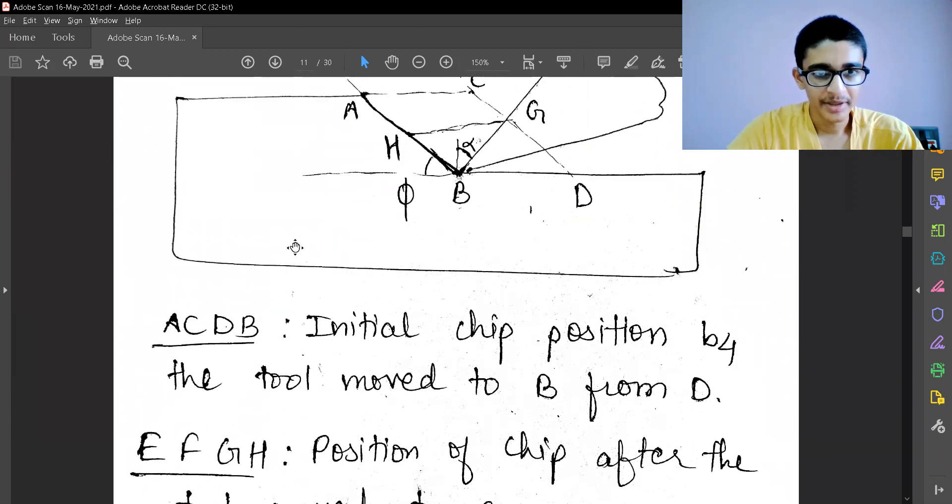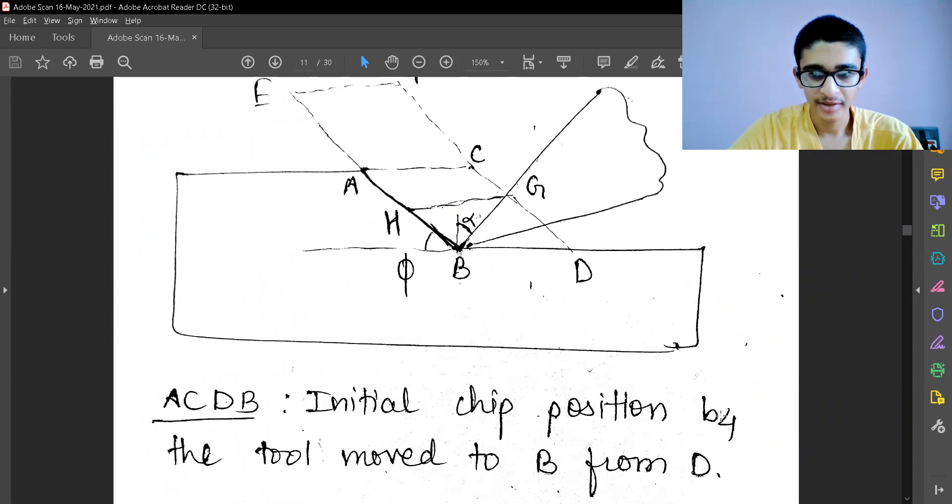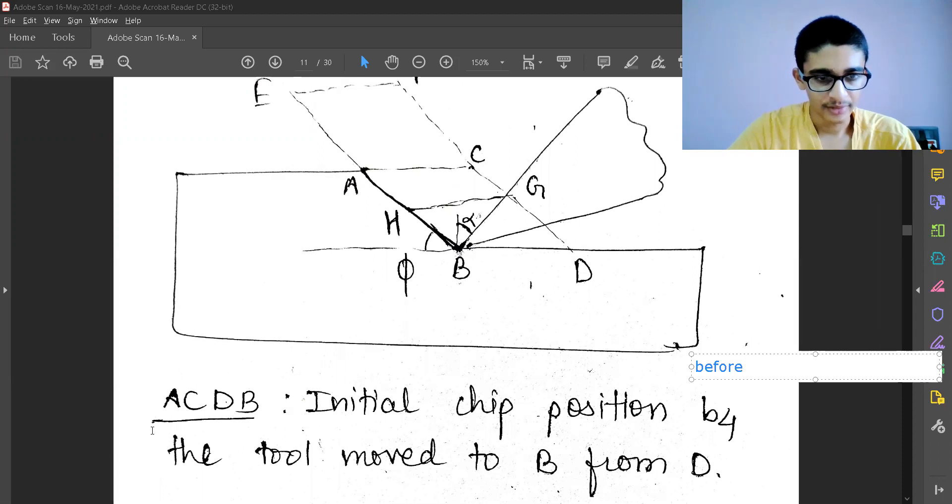ACDB is the initial chip position. Let me clarify: this 'before' means B-E-F-O-R-E. ACDB is the initial position before the tool moved from D to B.